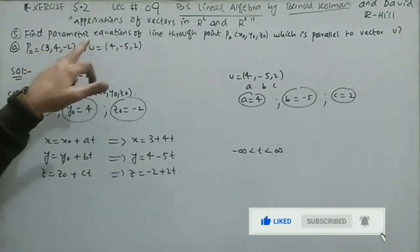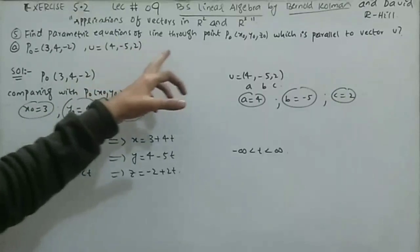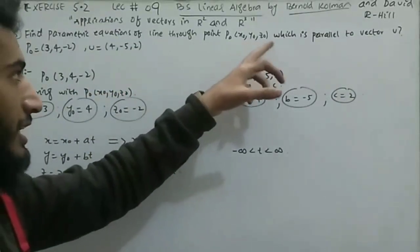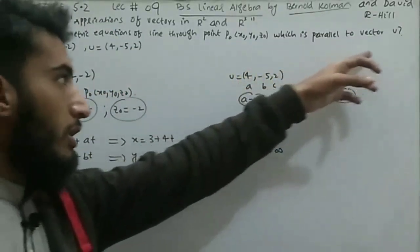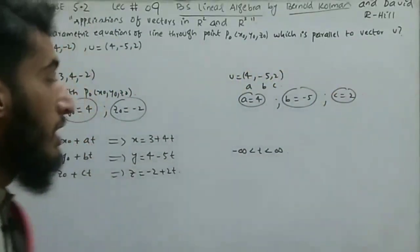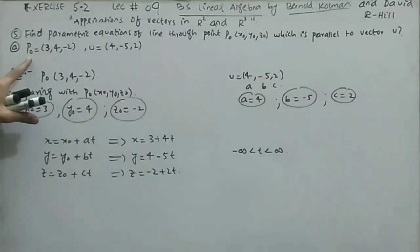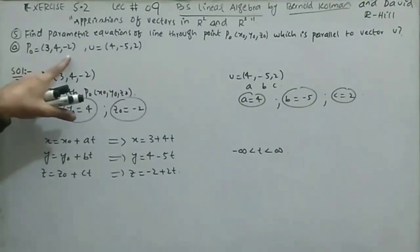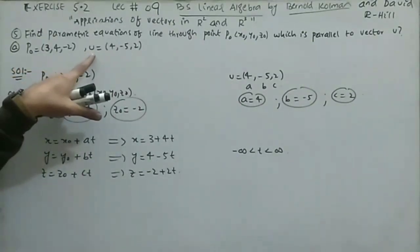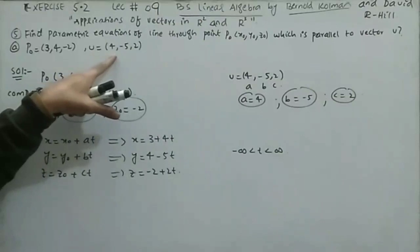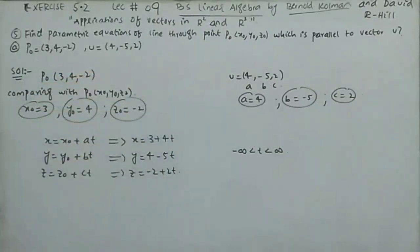Question 5: find the parametric equation of the line through point P0 = (x₀, y₀, z₀) parallel to vector U. There are four parts; I solve the first. P0 = (3, 4, −2) and vector U = (4, −5, 2) are given.